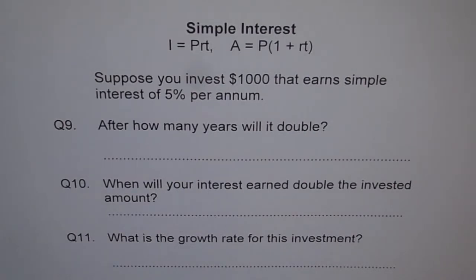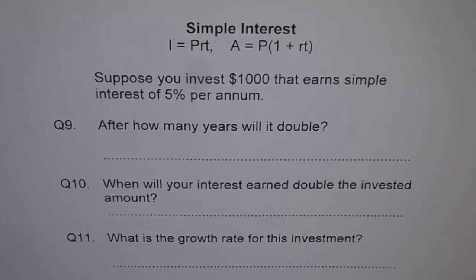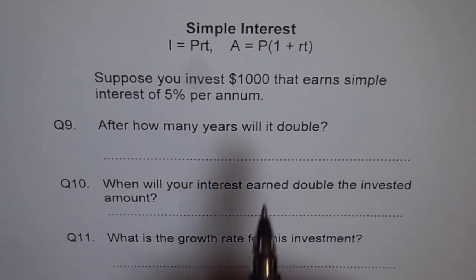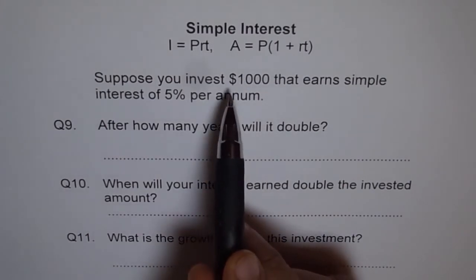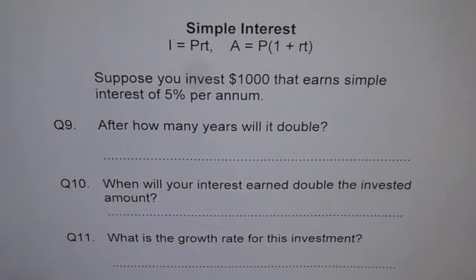When we say in how many years will it double, it really means that we are earning the same amount of interest as the investment — as the principal invested. In our case, the principal amount invested is one thousand dollars.